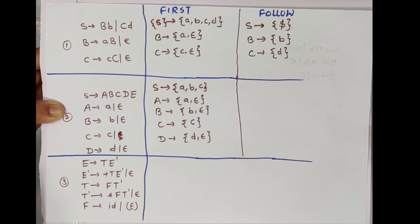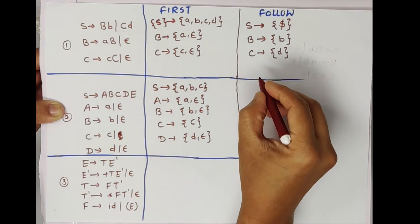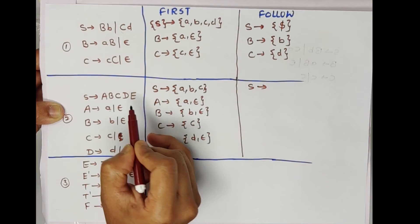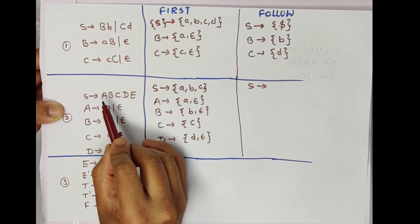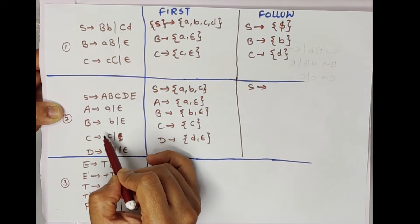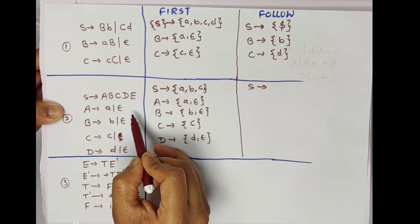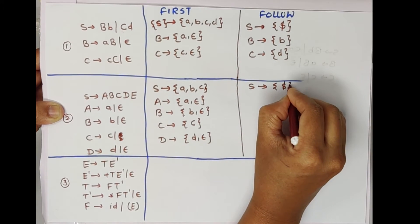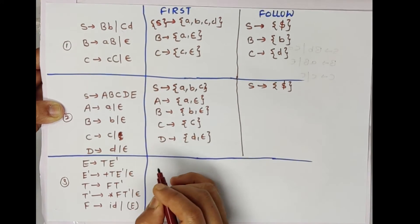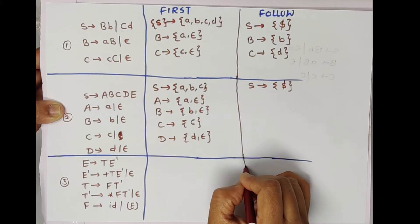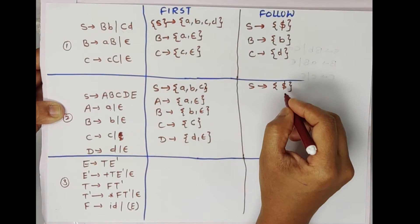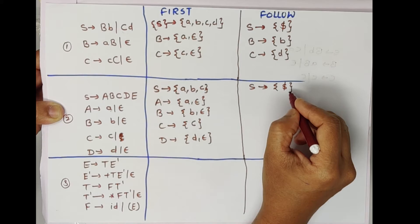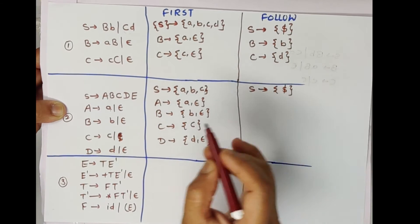Now we will find out the FOLLOW sets for this grammar. For S: where is S present in this grammar? Nowhere. So only the dollar symbol will be there, because S is the starting symbol of the grammar. So FOLLOW(S) = {$}.